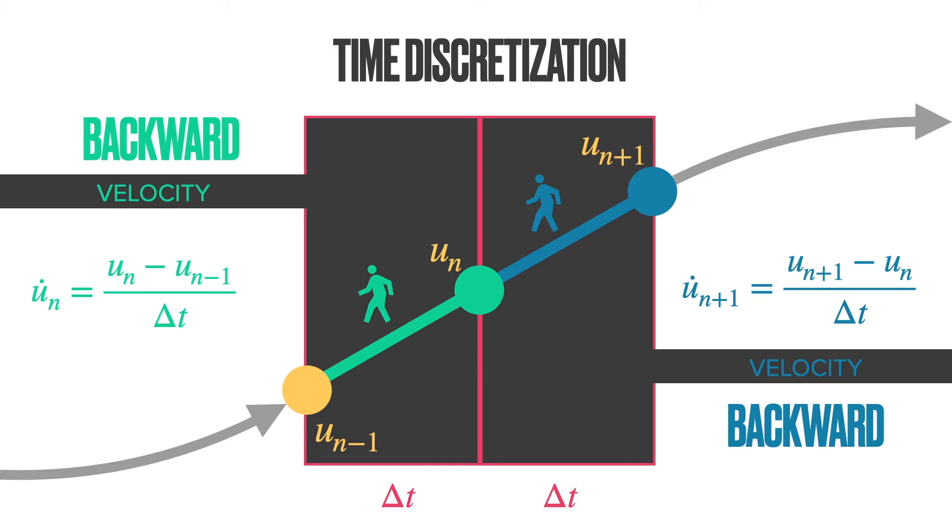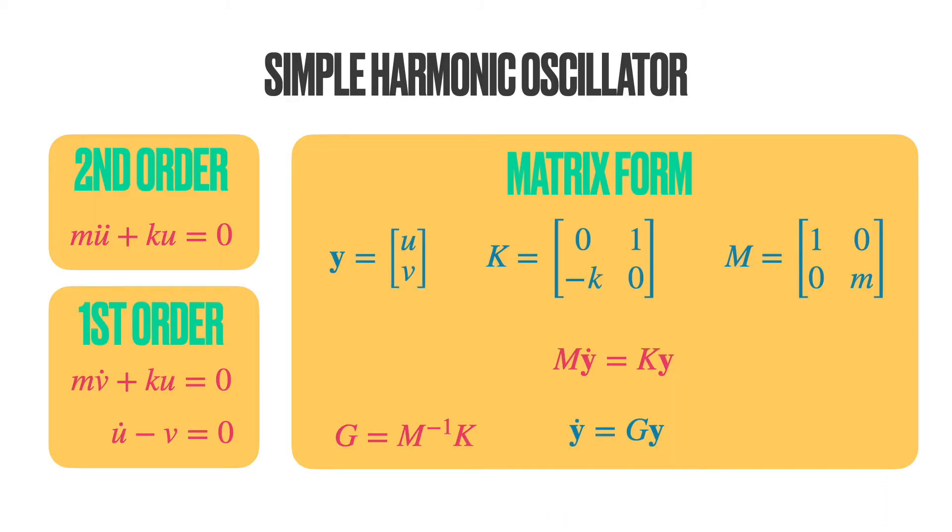Having specified the differences and two methods to relate these differences to the rates of changes, let's get back to a simple harmonic oscillator. The second-order equation is mu double-dot plus ku is equal to zero. Let's neglect the external force for the time being. This is the second-order equation in time.